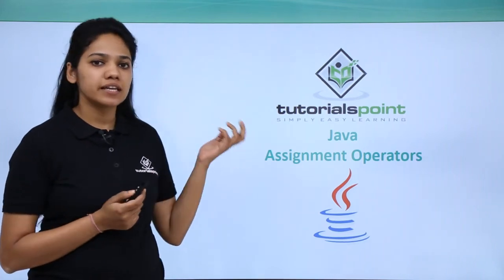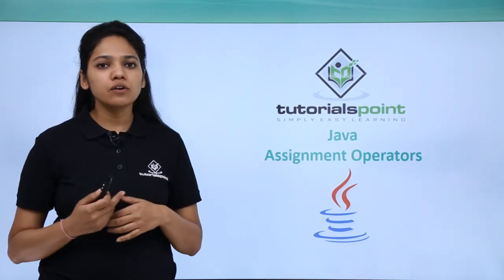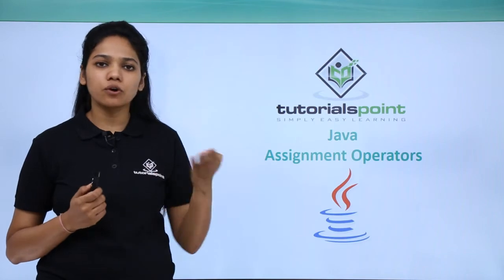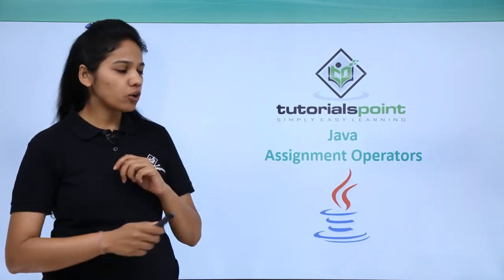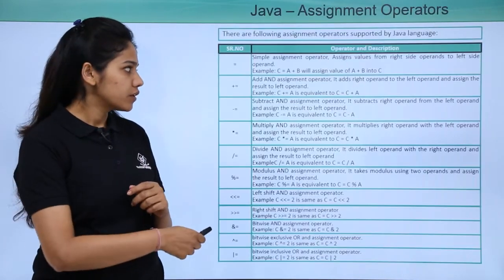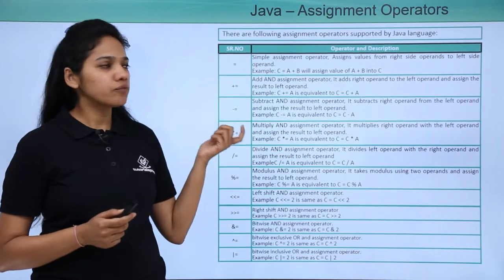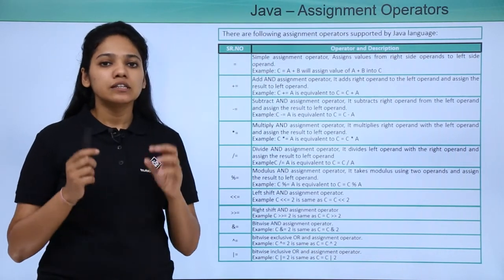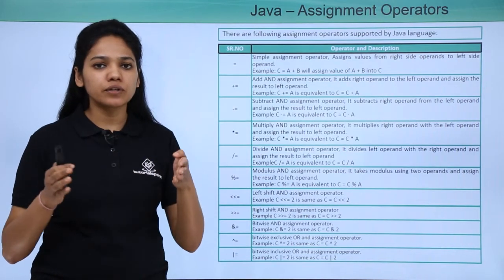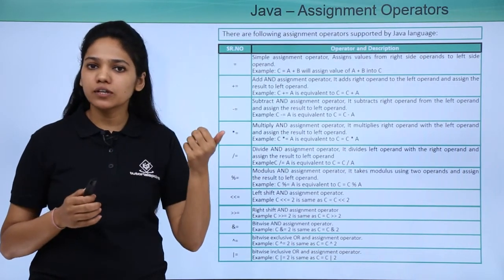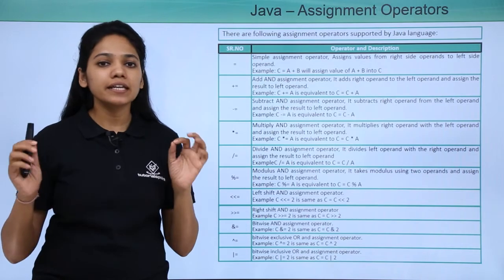The next one is an assignment operator, which allows us to perform certain operations on the operands using certain assignment operators. These are the certain assignment operators. Whether the value — you have two values, one is on your left hand side and one is on your right hand side, so you write an equation.